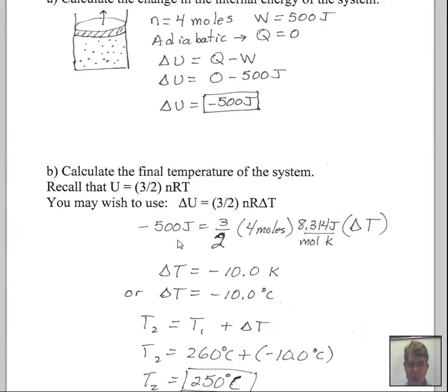Minus 500 joules we found for the change of internal energy. We're using this delta U equals three halves times four moles, the gas constant 8.314 joules per mole kelvin, and then the change in temperature. So we have everything we need to calculate that change in temperature. You should use your own calculator and verify that we're in agreement in this result.